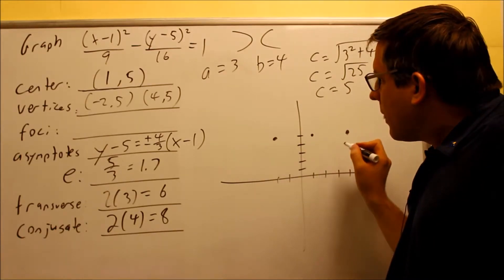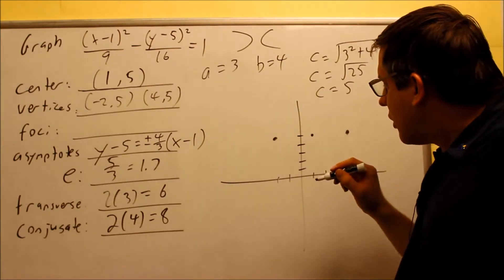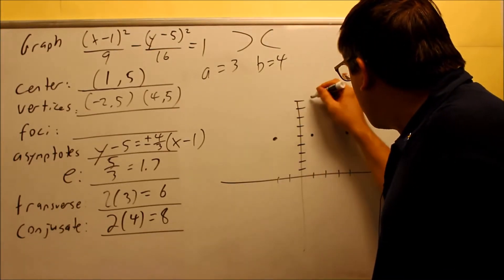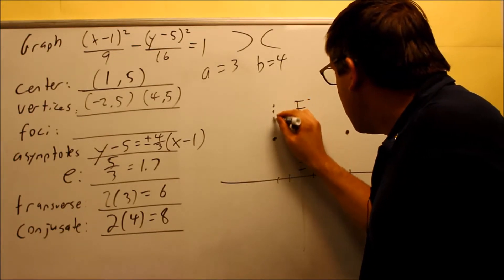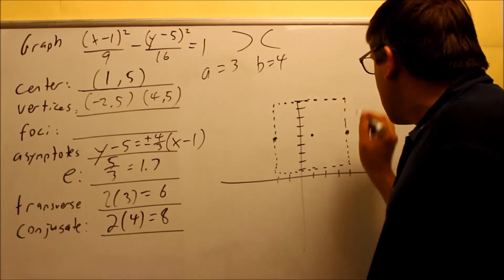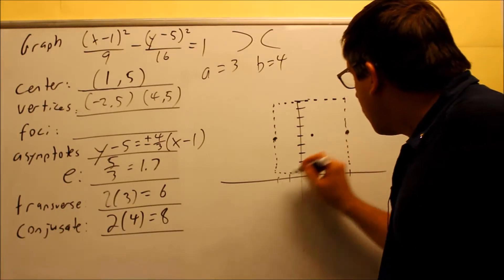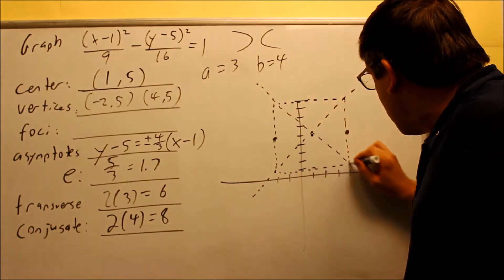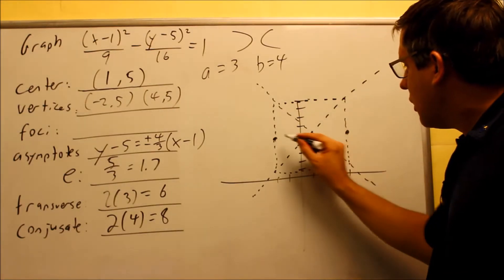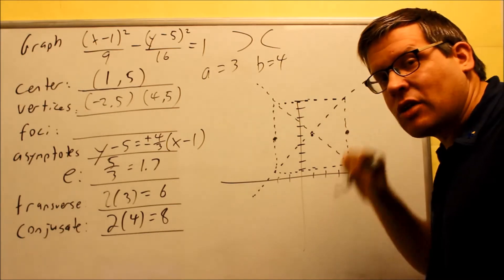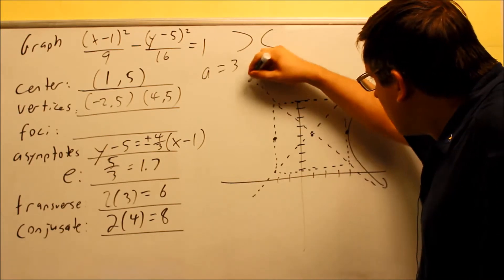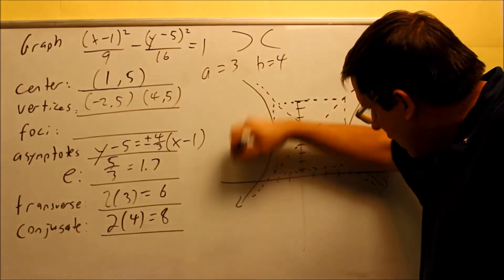To form the full box, from the center we also go up and down 4 (the b value): 4 up is the top of the box, 4 down is the bottom. We draw dotted lines across the top and bottom, forming the rectangle. Then we draw the diagonals of the box — these are your oblique asymptotes. The graph touches the sides of the box at the vertices, curves along the asymptotes.